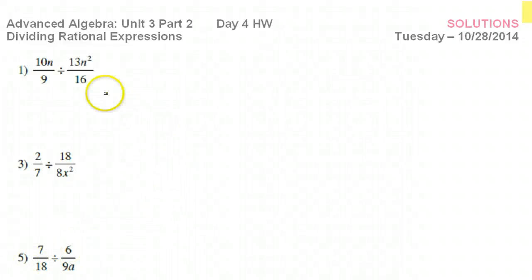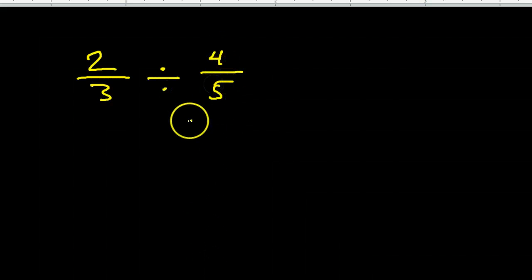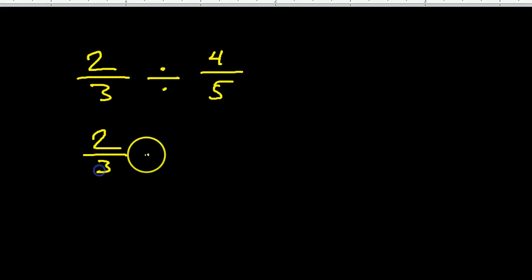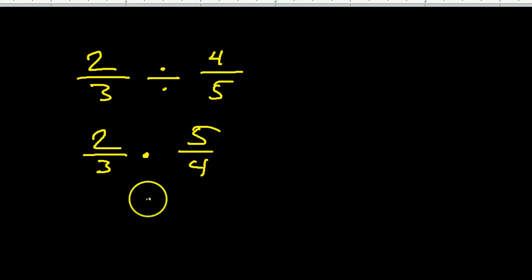In this lesson we are going to learn how to divide with rational expressions. First of all, don't forget how to divide with fractions in general. For example, if I have two-thirds and I want to divide that by four-fifths, if you want to divide by a fraction, you multiply by the reciprocal. So this is the same thing as two-thirds times five-fourths.